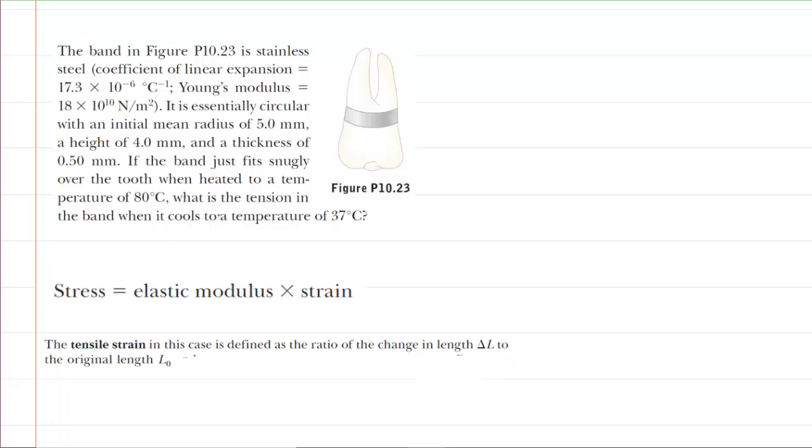What's really important to note about this question is that as this band cools from a temperature of 80 degrees Celsius to 37 degrees Celsius, it's going to contract. And as it contracts, it's going to fit ever more snugly against the surface of the tooth. And so what happens is a tension develops within the band, and it is our job to determine that tension. In order to do that, we have to revisit a couple of principles from an earlier chapter.